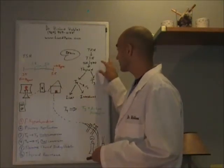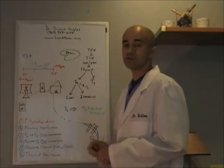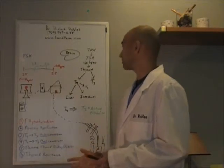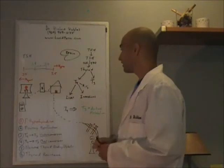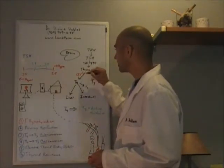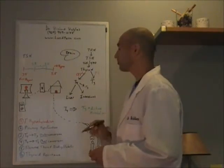This TSH then stimulates a couple of enzymes. One of them called TPO which releases iodine so that your thyroid can actually make thyroid hormones. Then your thyroid will produce two hormones, T4 and T3. Now 93% of the thyroid's output is T4 and 7% of the thyroid's output is T3.